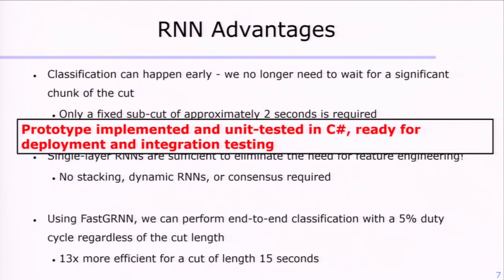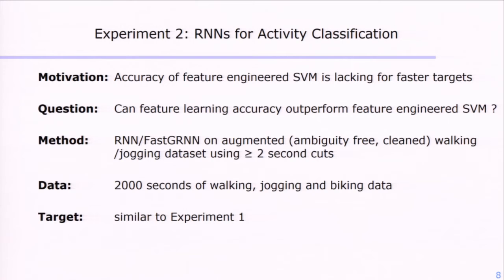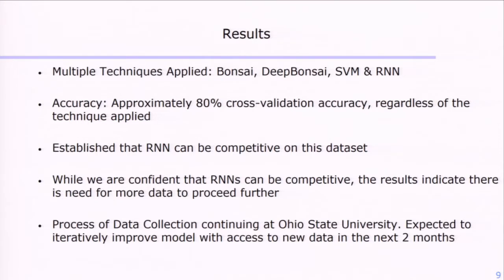Extending this to the activity dataset, which is patently a harder task than human versus non-human, we tried a number of techniques — SVM, Bonsai, de-Bonsai, and RNN. Irrespective of the technique used, it gives an accuracy of roughly 80%. The RNN is roughly competitive compared to other techniques on the activity dataset. The larger implication is that there's a shortage of data in this particular task and we need more data. Data collection is continuing, and we hope to make better inroads in the next one or two months.